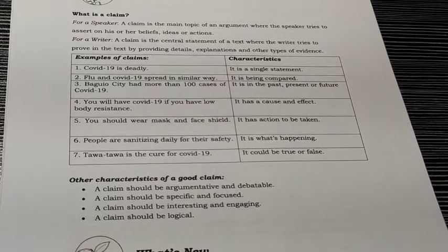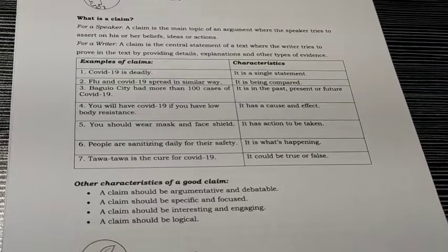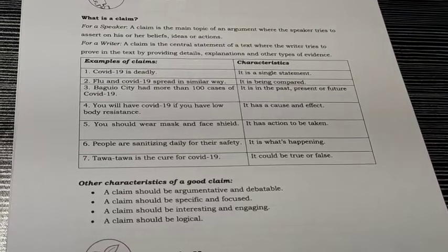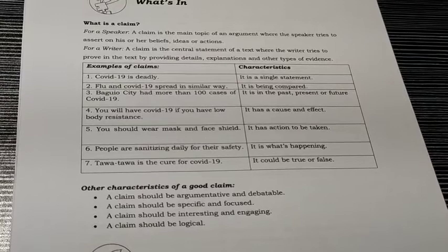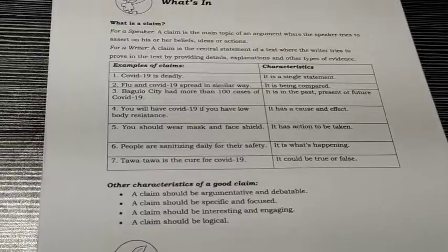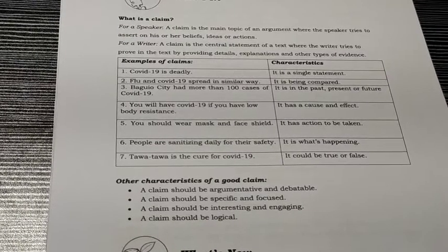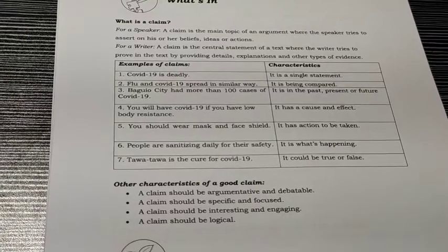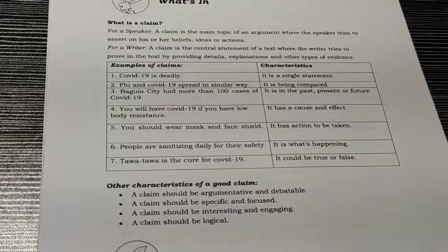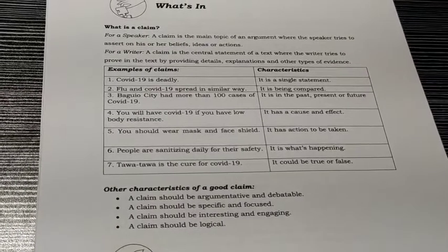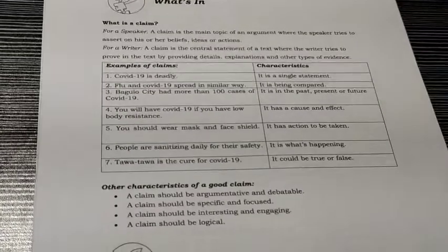Other characteristics of a good claim: it should be argumentative and debatable, meaning it can hook and be interesting to readers or listeners. It should be specific and focused, because your claim should be clear to make it firm and strong. It should be interesting and engaging — how will you make your readers believe you if your claim is not engaging? And lastly, it should be logical — correct and organized so readers and listeners understand your point and find it believable.